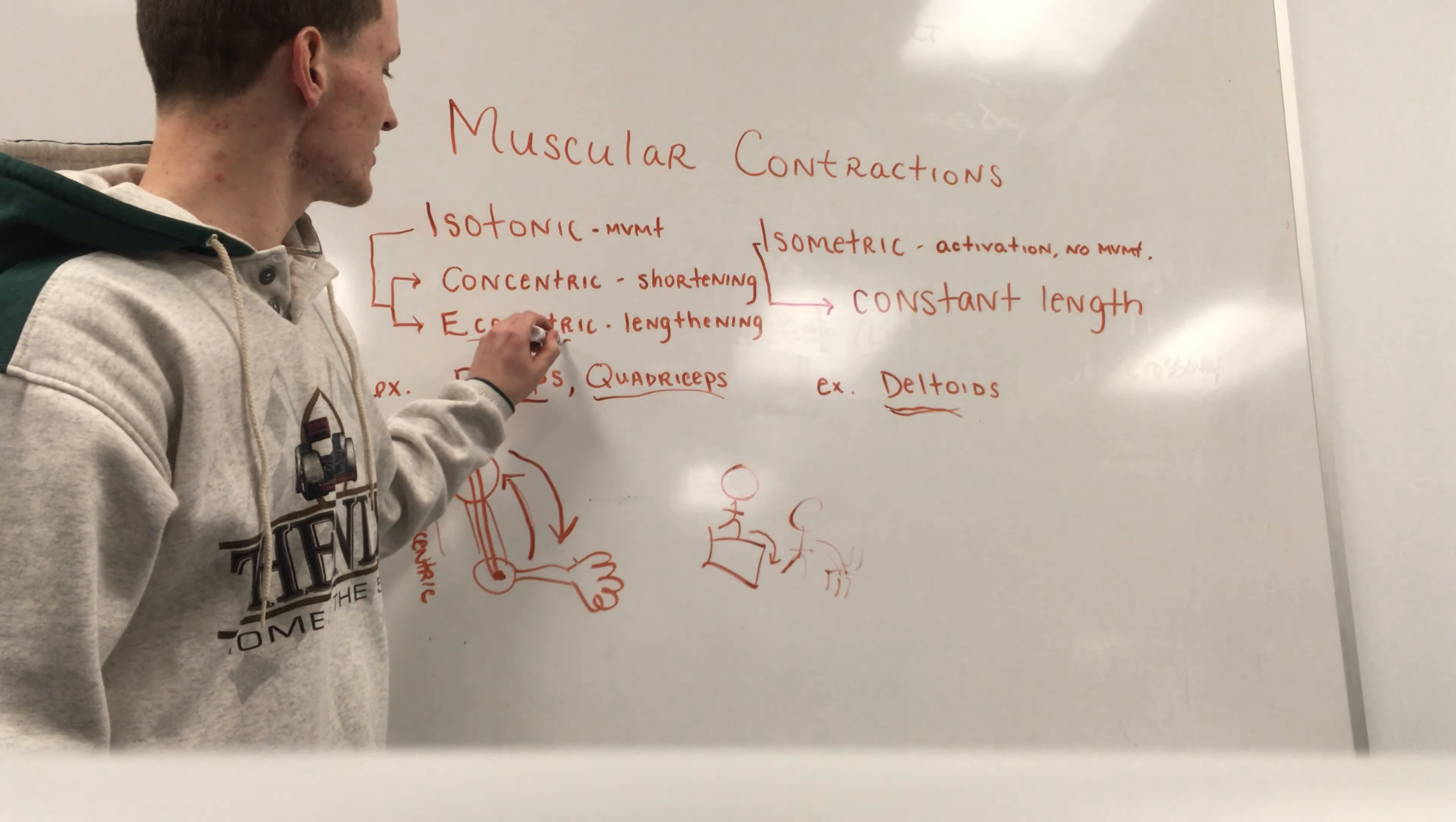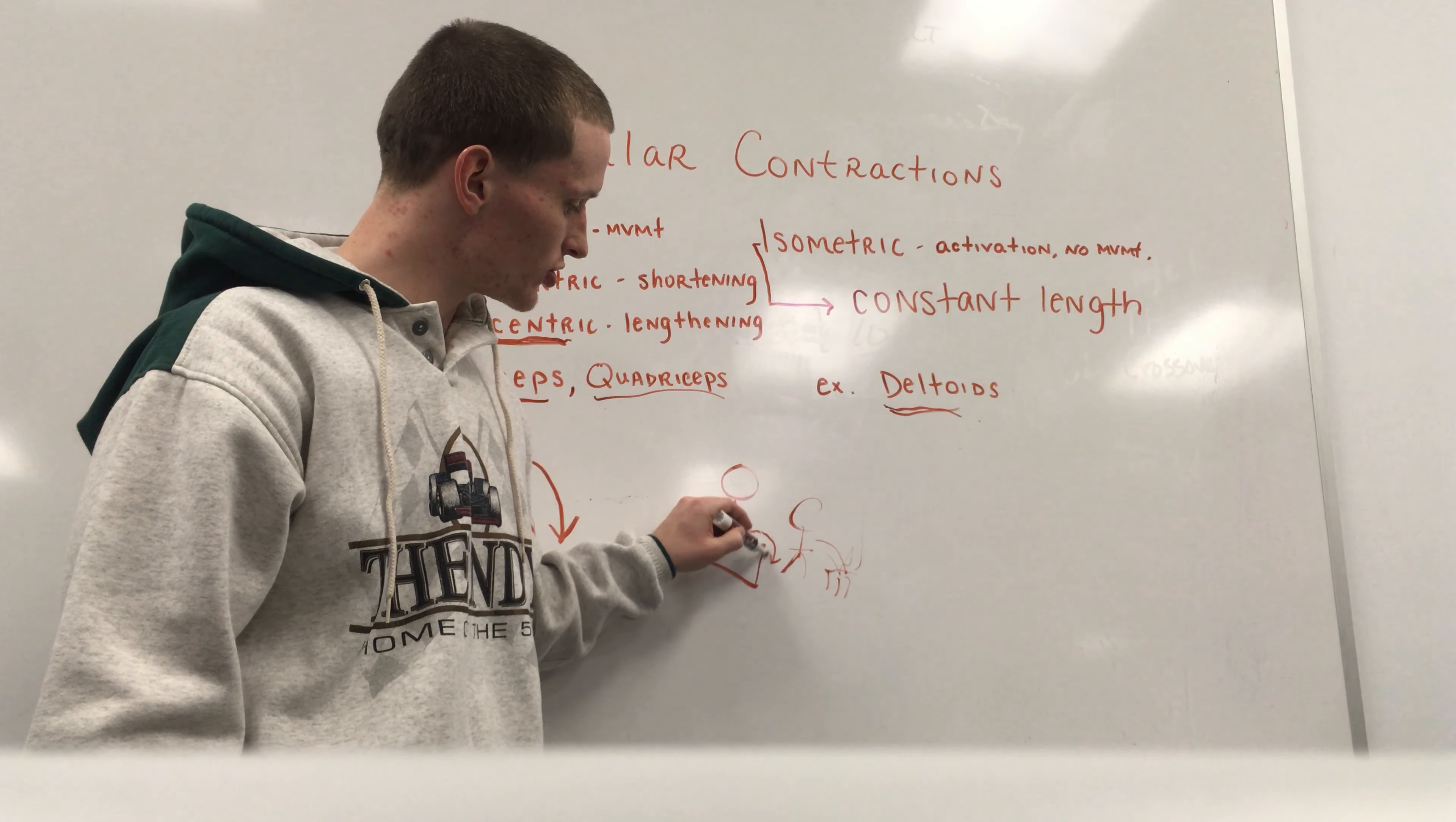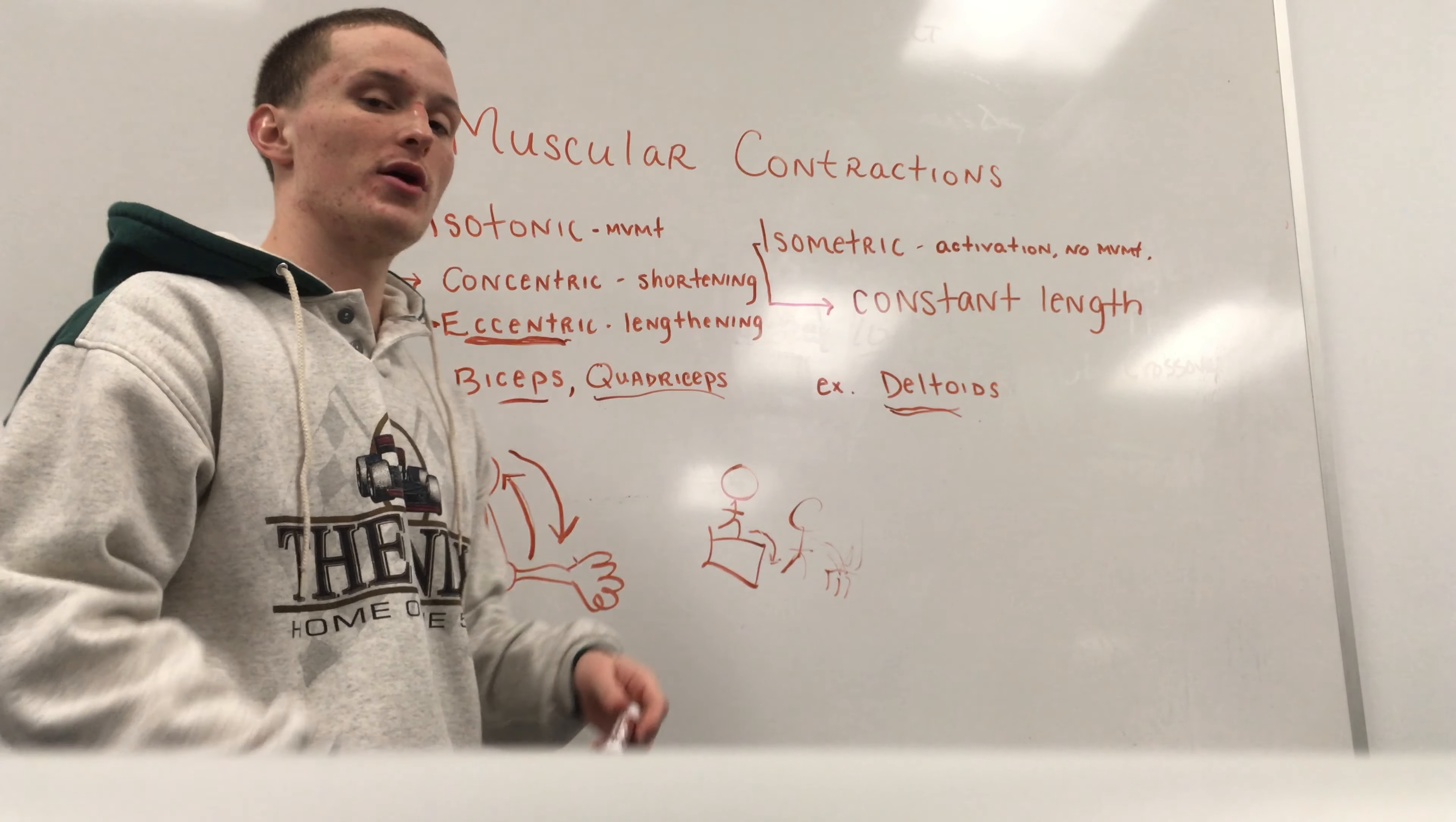I as a therapist need to recognize that the eccentric contraction of their quads is not strong, and that we need to work on eccentric activities of the quads, just like these anterior step downs, and the downward descending motion in those sit to stands to strengthen the eccentric contraction of those quads and improve my patient's function.